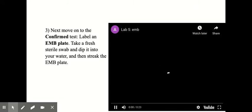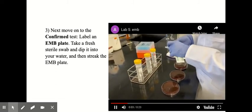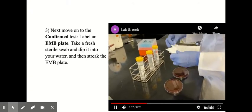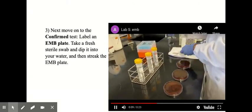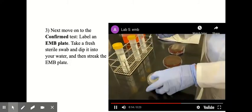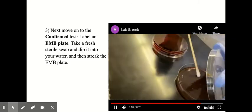you label your EMB plate and then take a fresh sterile swab and dip it into the water sample. And then streak that using sterile technique carefully onto the EMB plate.